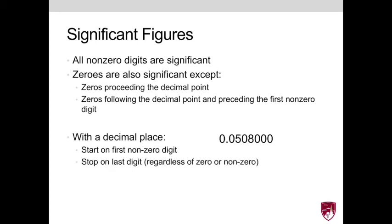So in order to determine significant figures for numbers with a decimal place, the rule of thumb is to start on the first non-zero digit and stop at the last digit. And so consider the value that is read of 0.050800.